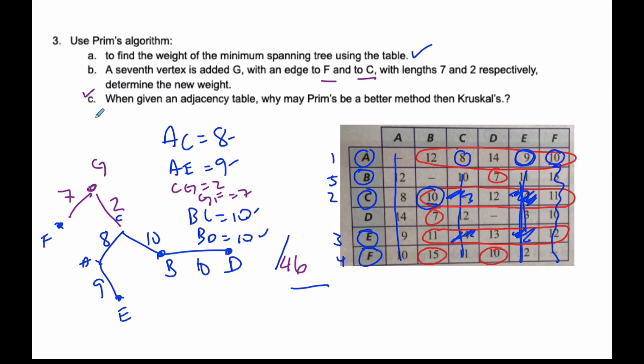Finally, when given an adjacency table, which may be better to use, Prim's or Kruskal's? Well, this here is all I really need to find the minimum spanning tree. I don't actually have to draw it out all the time, even though I think it helps understand what's going on. Because of that, finding Kruskal's, you're not allowed to make cycles. That's what you have to look for. When you're just doing it on the table without drawing it out, it's really hard to find cycles.